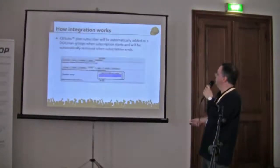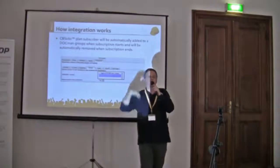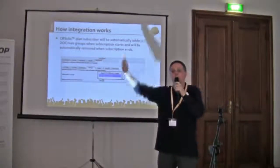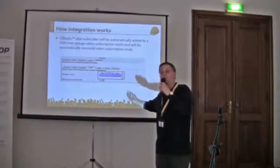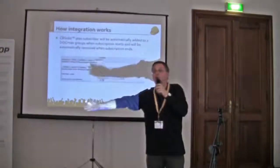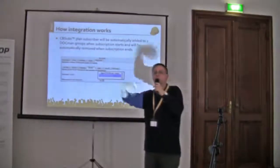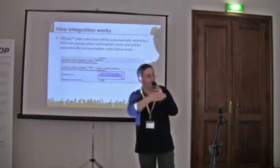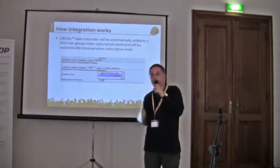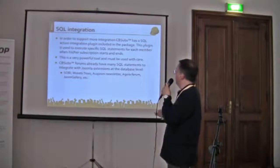There's integration with third-party plugins — for example, Docman. We can automatically say when a new subscriber starts a subscription, add them to specific Docman groups which unlock download privileges, and when the subscription ends, automatically remove them. Imagine a template club with a download area — when somebody becomes a subscriber they're automatically authorized to download, and once the subscription ends they're removed. All this is done automatically. If they go to PayPal and dispute the payment, when the PayPal IPN message comes back, CB Subs will automatically block them and take them out of that group.